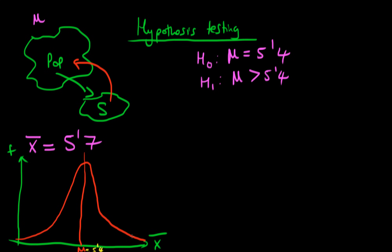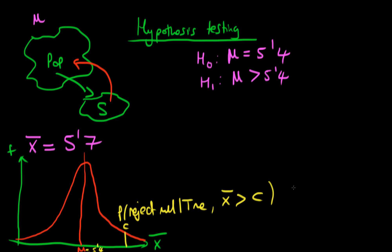What we need to do is construct an arbitrary cutoff. This cutoff is such that the probability that we would reject the null, given that it was true and given that we got a value of x-bar which was greater than this cutoff — which I'm going to call c — had to be less than or equal to 0.05.